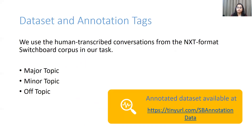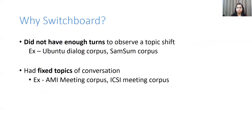We use the human transcribed conversations from the Switchboard corpus in our task of off-topic detection. We annotated the corpus with three major types: major, minor, and off-topic. The main reason we opted for the Switchboard corpus is that other datasets either did not have enough turns, as seen in the Ubuntu Dialog corpus or Samsung, or had fixed topics of conversation, as seen in the AMI or ICSI meeting corpus dataset. These properties were not favorable for modeling off-topic shift detection for open domain conversations.